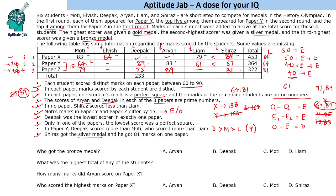For paper X, Deepak plus Aryan must equal 138. Starting with 61 gives 77 — not prime. The only possibility where both are prime is 67 and 71. Using Deepak's total score of 162 from paper Z, we can work out that Deepak scores 71 in paper X and Aryan scores 67 in paper X. This completes all the scores.